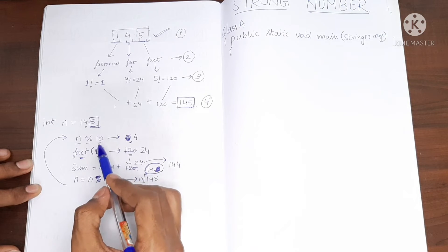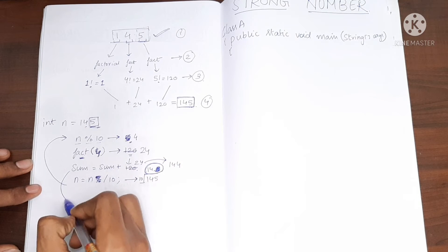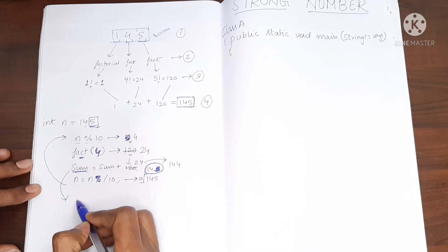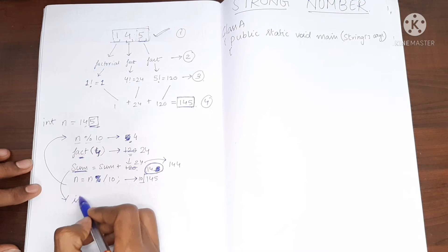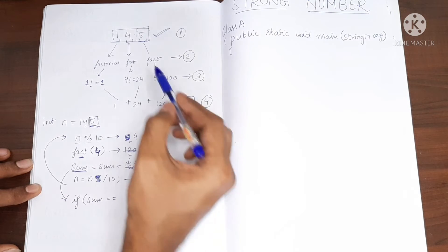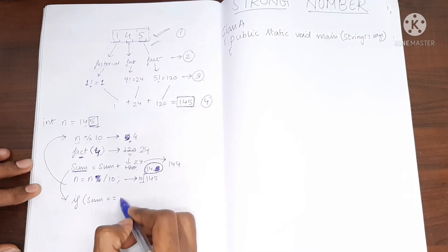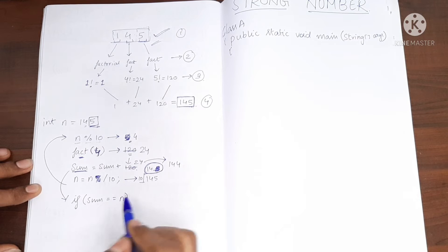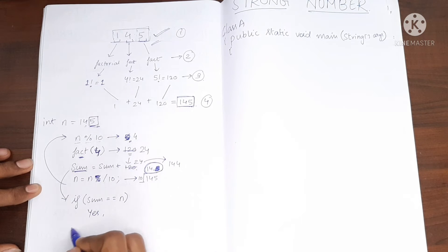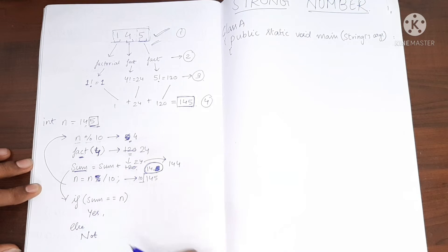We keep repeating this process until we end up with a final value in sum. Then we check if the value in sum equals the initial value. If it is equal, we say it is a strong number; otherwise, we say it is not a strong number. That is our approach.